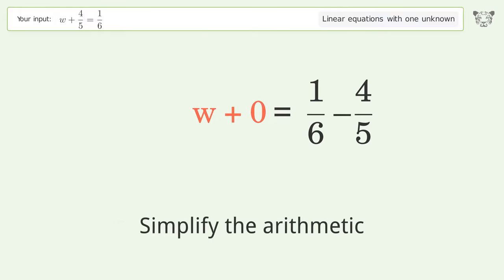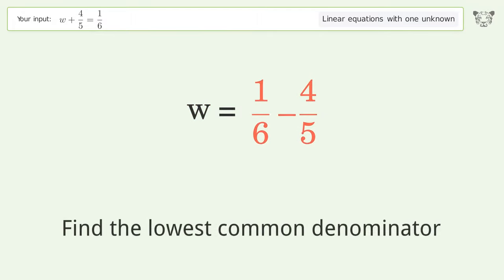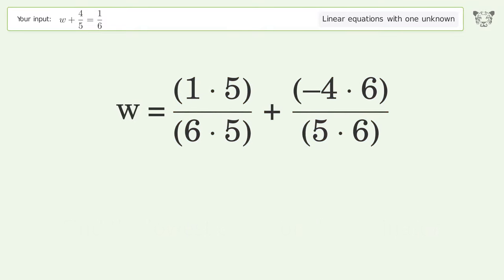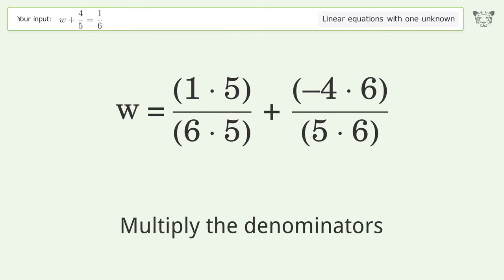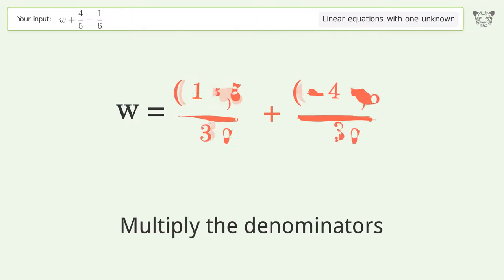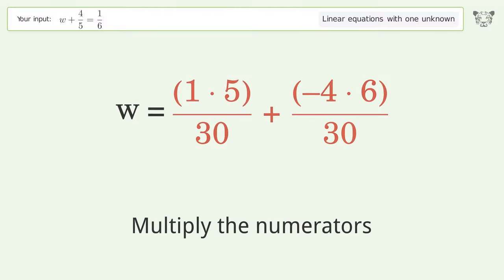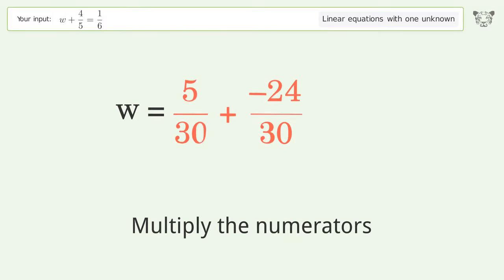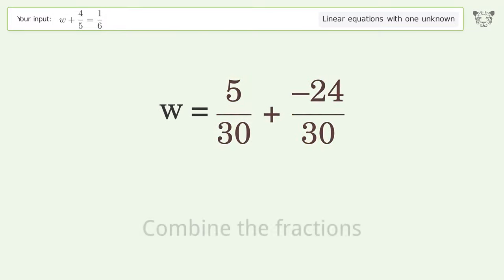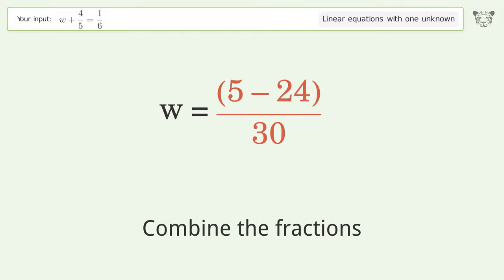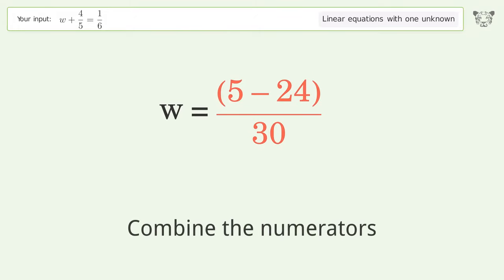Simplify the arithmetic. Find the lowest common denominator. Multiply the denominators. Multiply the numerators. Combine the fractions. Combine the numerators.